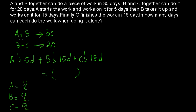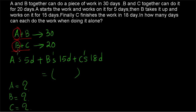We are only given how much time is taken by A and B together, and how much time is taken when B and C are working together. To solve 3 variables we need 3 equations, but here we only have 2 equations. So we cannot directly solve these 2 equations to find the days taken by A, B, or C individually. We have to take another approach for this type of question.